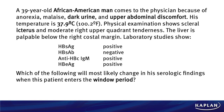So for this question — a longer question, but don't let that intimidate you. You're the strategic test taker here. A 39-year-old African-American man — notice that's highlighted and bolded because ethnicity has an impact on a lot of these diagnoses. He comes in with anorexia and malaise, which are common presentations, but dark urine is not that common — that's why it's bolded and should jump out at you.